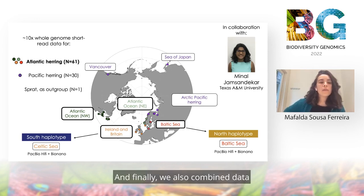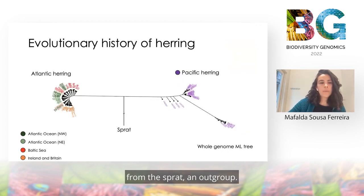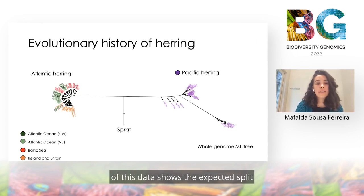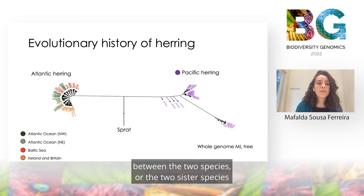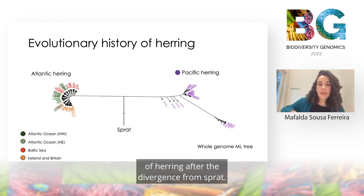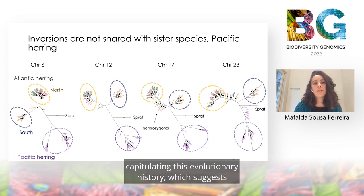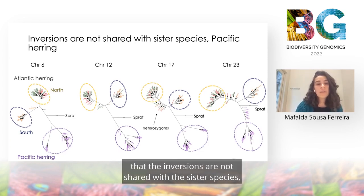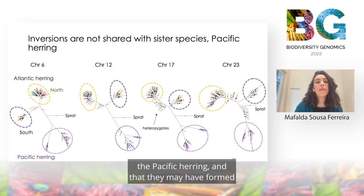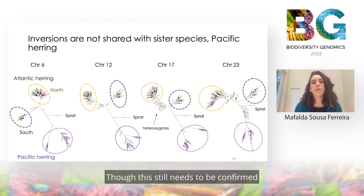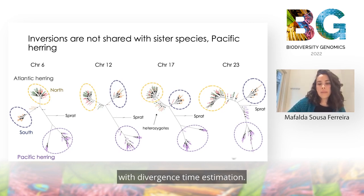We also combined data from the Sprat as an outgroup. A whole genome tree of this data shows the expected split between the two sister species of herring after the divergence from Sprat. Trees from each one of the inversions recapitulate this evolutionary history, which suggests that the inversions are not shared with the sister species, the Pacific herring, and that they may have formed after the split from the sister species, though this still needs to be confirmed with a divergence time estimation.